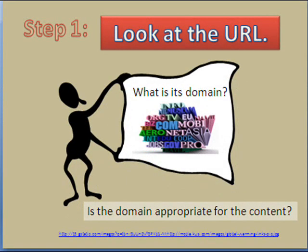What type of domain does the site come from? Is it .edu (educational), .gov or .mil (government or military), .com or .net (commercial), or .org (non-profit organizations)? Look for country codes, like .us for United States or .uk for United Kingdom.